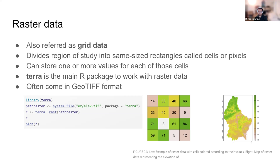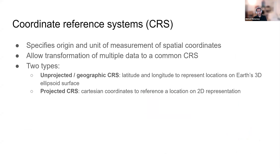Raster data — also referred to as grid data — in contrast to vector data where we have information about polygons, lines, or points, divides a region of study into same-size rectangles or grids called cells or pixels. Within each grid it can store one or more values. The main R package to work with raster data is called 'terra', and the files for raster data often come in GeoTIFF format.